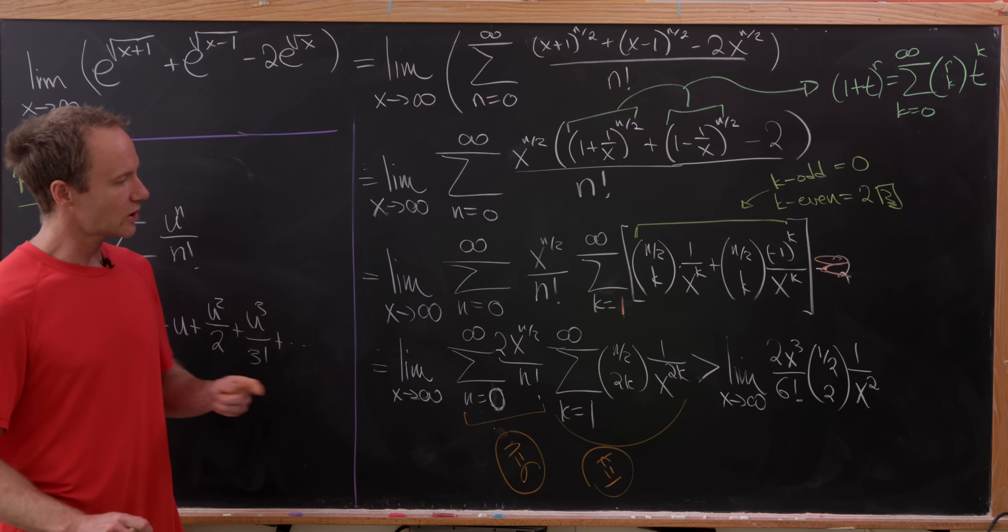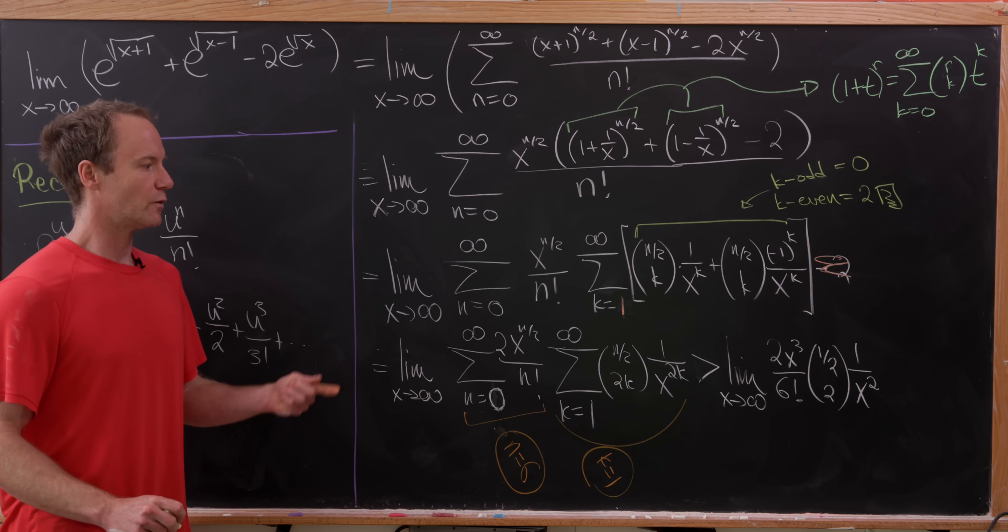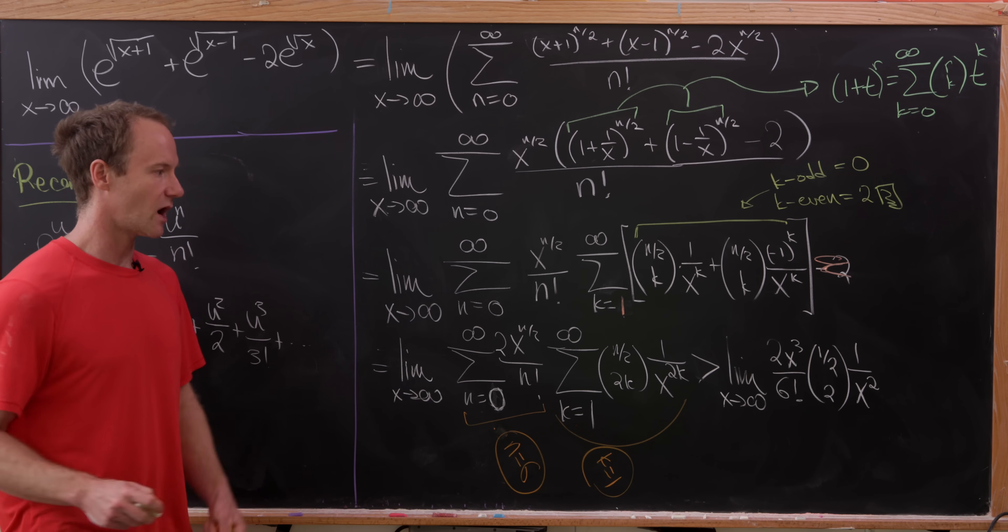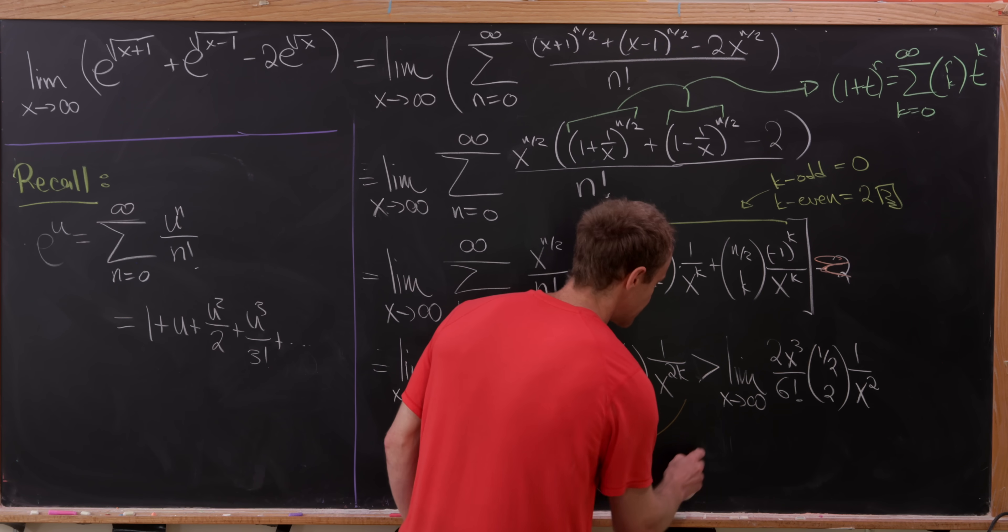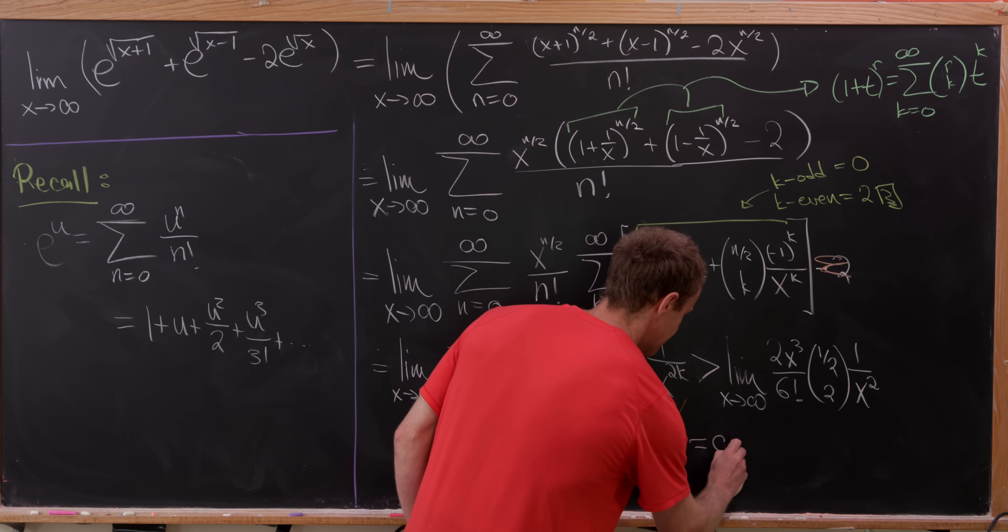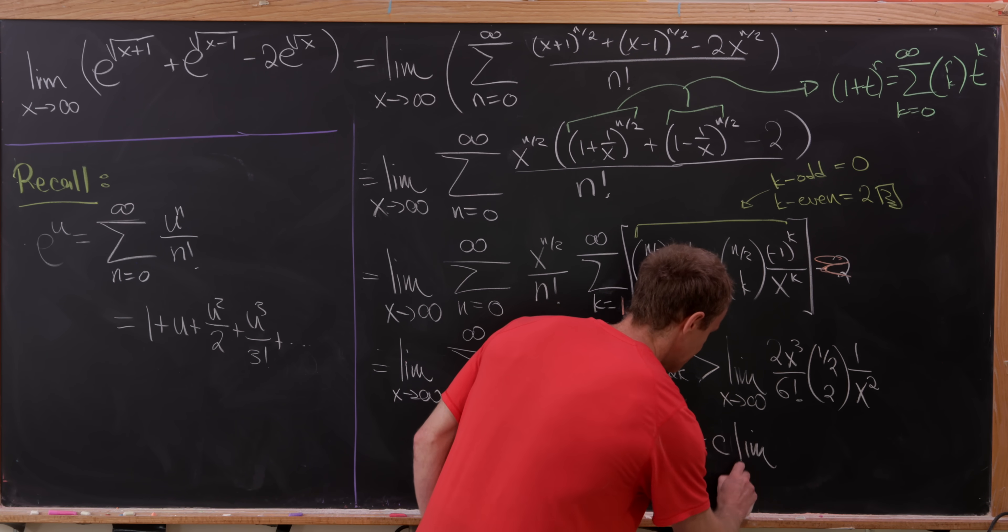Oh, but look at what's happening there. We have, in the end, some constant times x. So let's observe that this is equal to c, some constant times the limit as x goes to infinity of x. What's that constant?